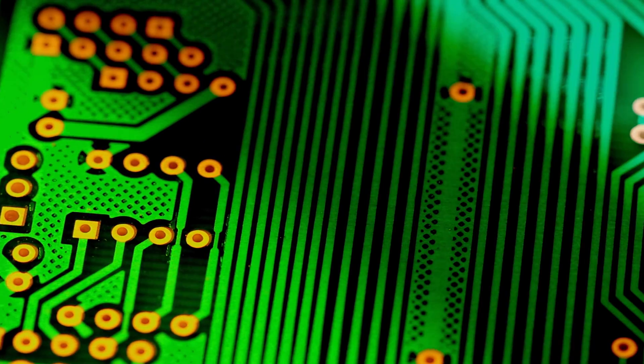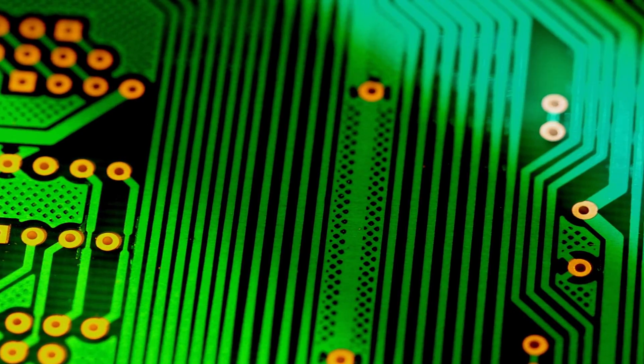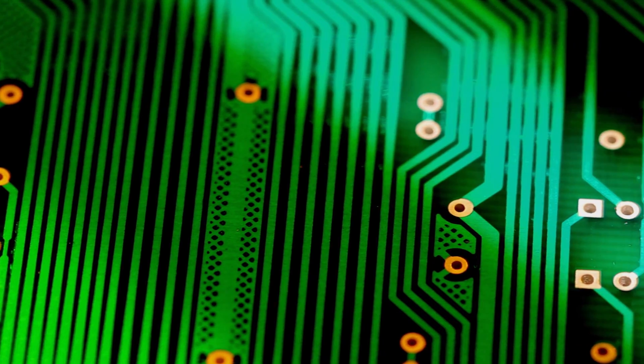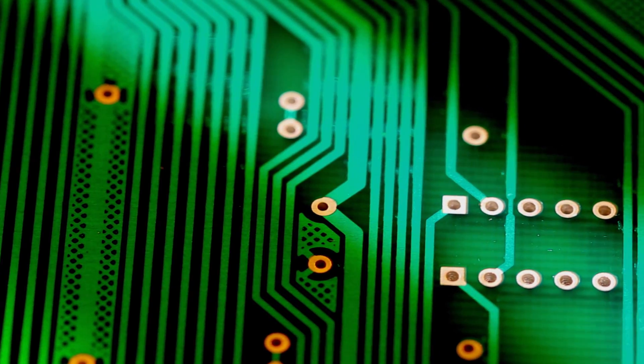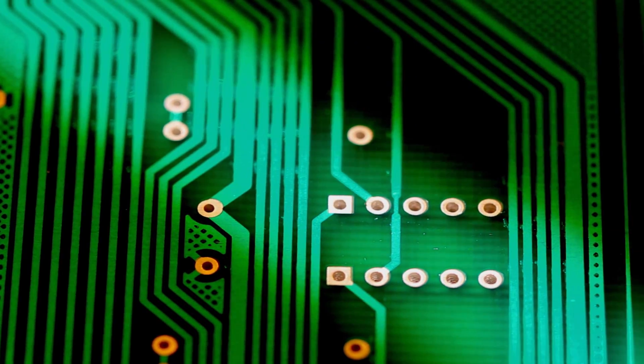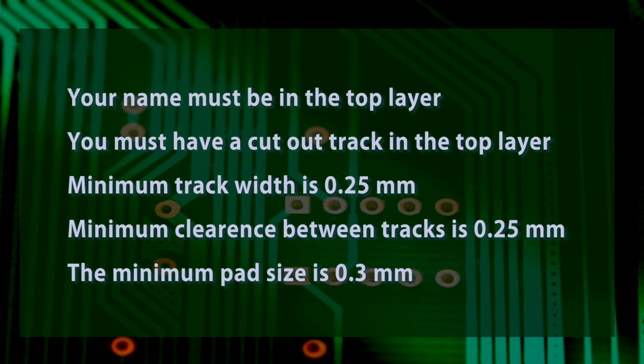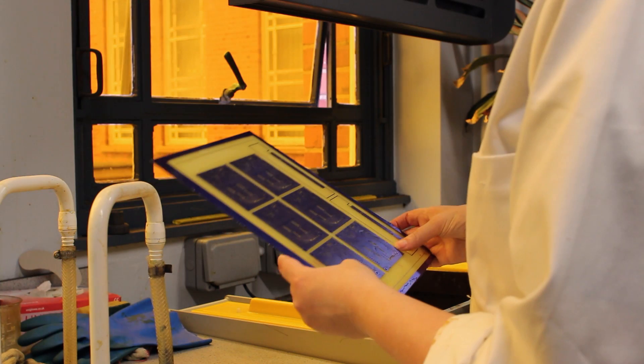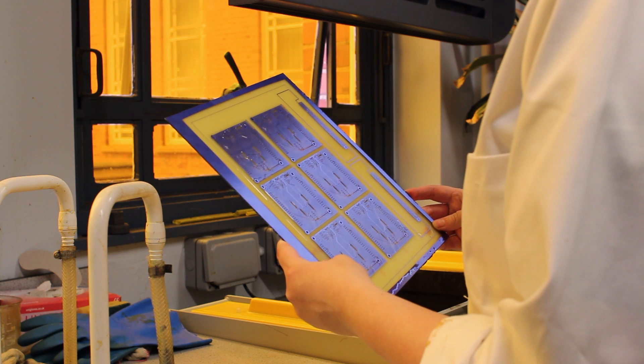The University of Manchester's PCB lab uses a photochemical process to produce prototype printed circuit boards on request by students and staff. The designs submitted for production must adhere to restrictions for the production process to be a success. In this video we'll look at the production process and highlight the stages where your designs have direct impact.